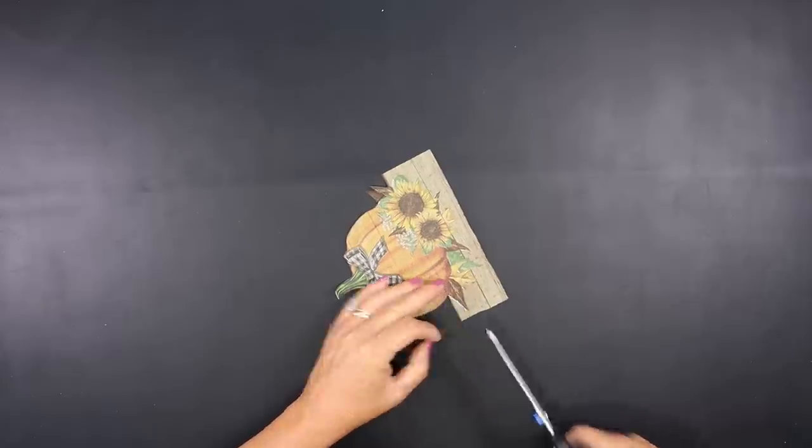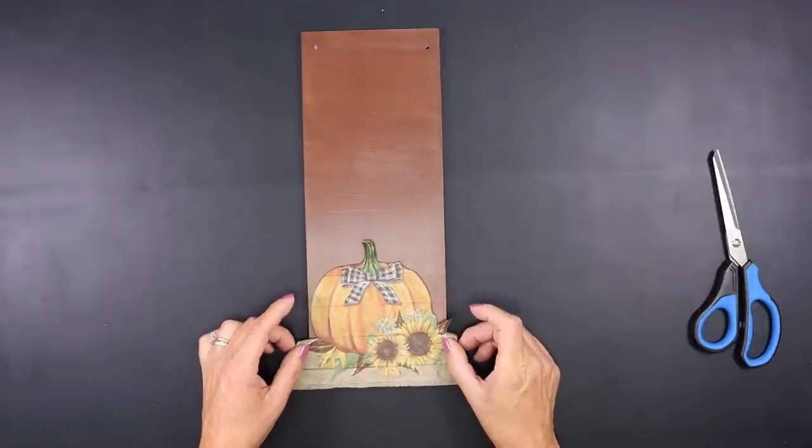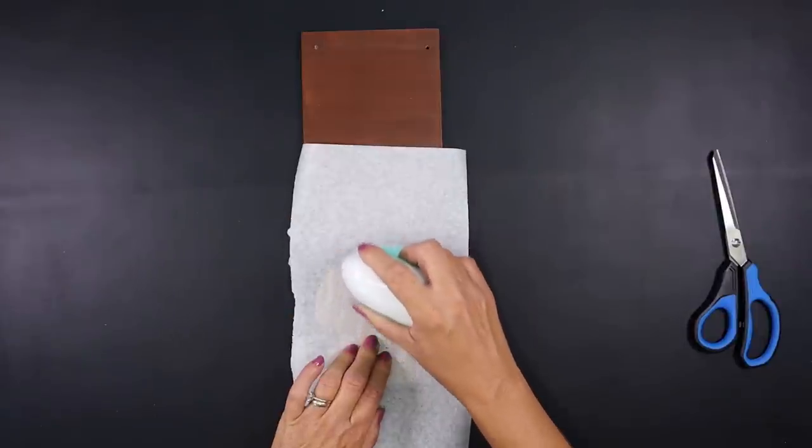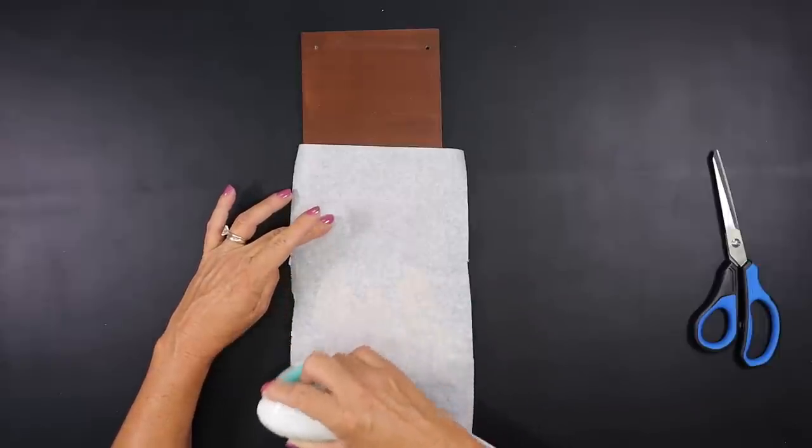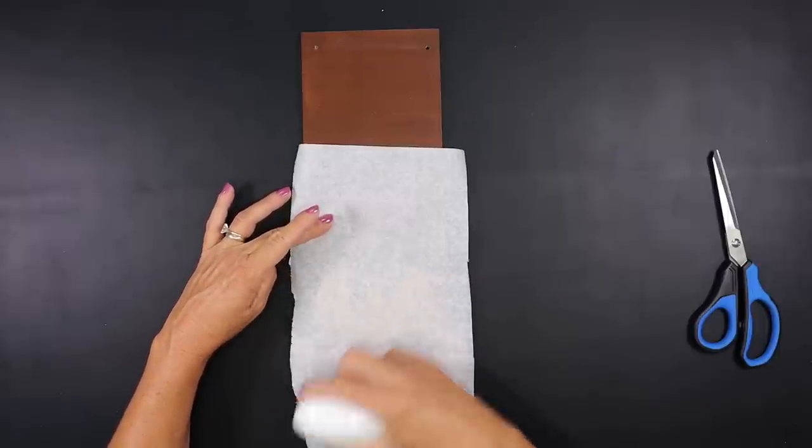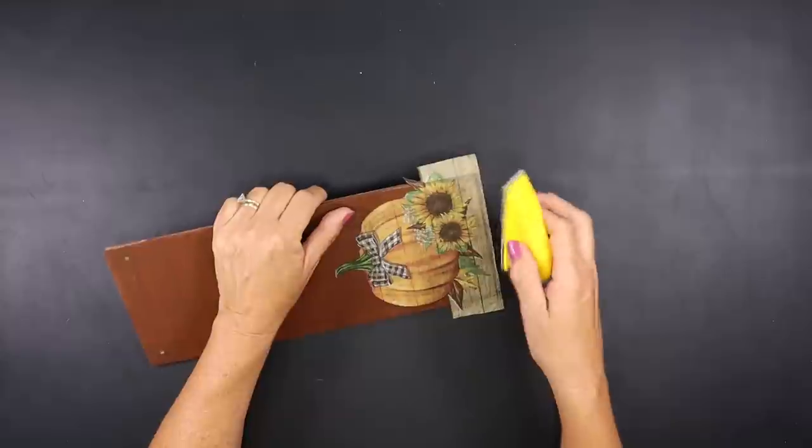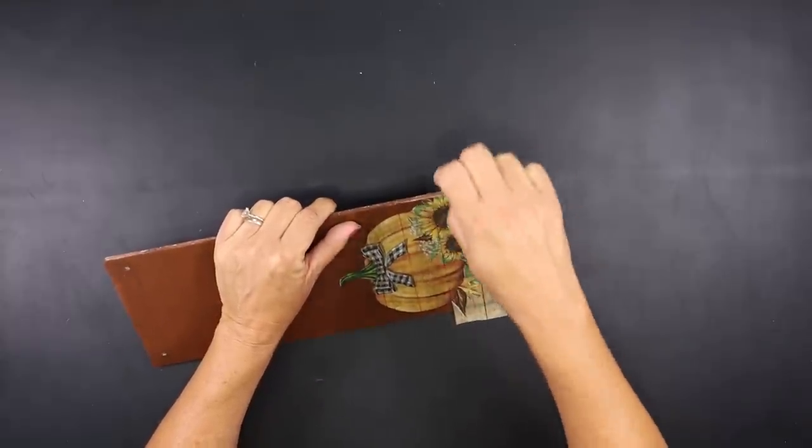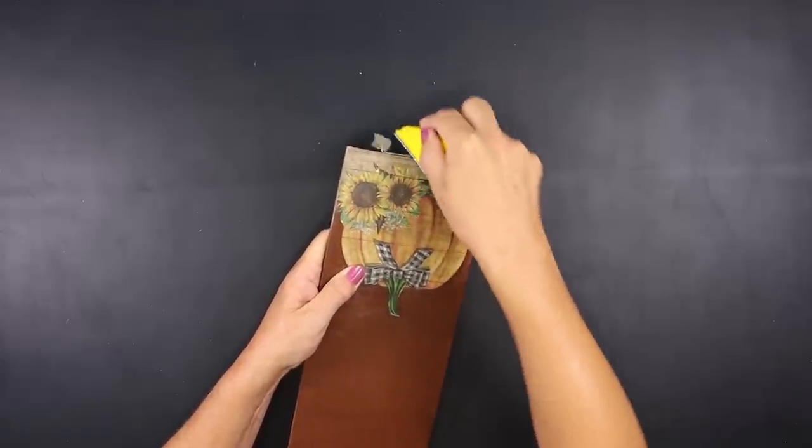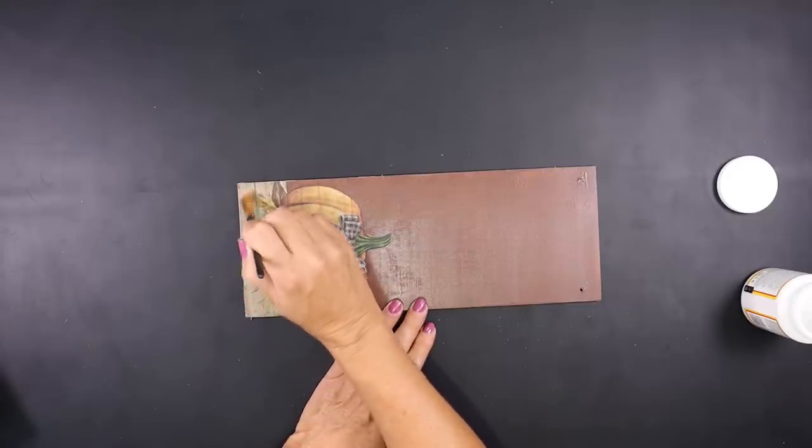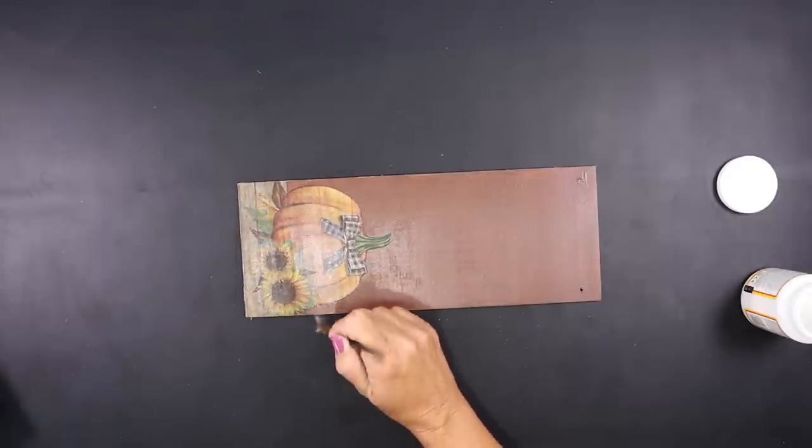Now that our sign has dried from applying that Mod Podge we're going to place our image or our napkin right there at the bottom where we filled in those holes. Place a piece of parchment paper. Using our iron on 375 we're going to gently go over that parchment paper to adhere our napkin to the sign. It is important to use the parchment paper because it will reactivate that Mod Podge wherever it was applied. To remove the excess napkin just take a piece of sandpaper go around the edge in one direction and it will come off and give you a nice smooth finish. I am going to add a layer of Mod Podge over the image to seal that and protect it and let that dry.